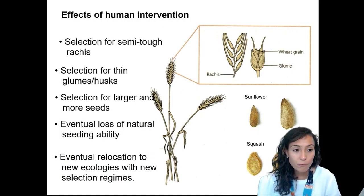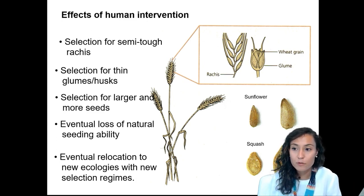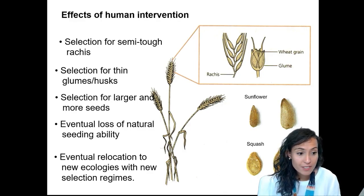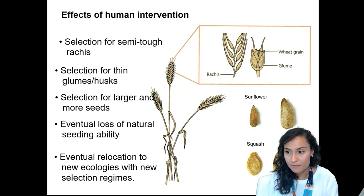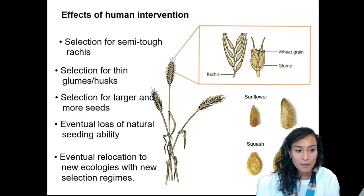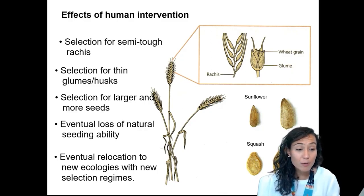Human intervention with the teosinte plant would have had the following effects: they would have selected for semi-tough rachises, which are the stalks that connect the grain to the actual stem; they would have selected for thin glumes and husks, which would allow for easy peeling and access to the grains; they would select for larger and more seeds to intensify the yield from any given harvest; they would also select for natural seeding ability, so for plants most effective at distributing and growing their own seeds; and eventual relocation to new ecologies with new selection regimes, looking for plant types particularly resilient to being transferred to different climates.